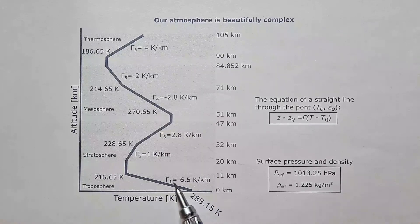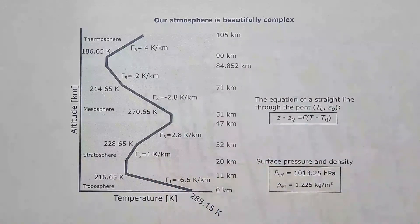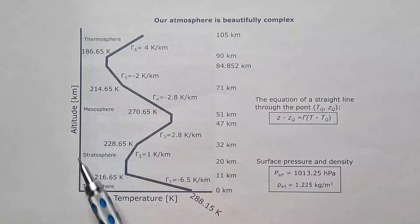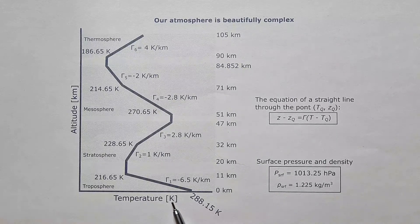Here is the temperature profile, shown as a thick black line in the standard atmosphere. The Y axis is altitude in kilometers, and the X axis is temperature in kelvins. I decided to use kelvins because this unit is often used in thermodynamics.